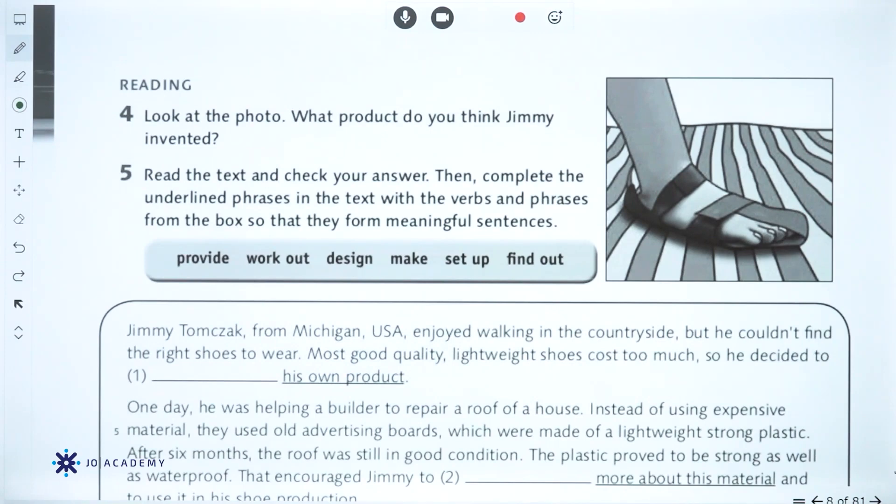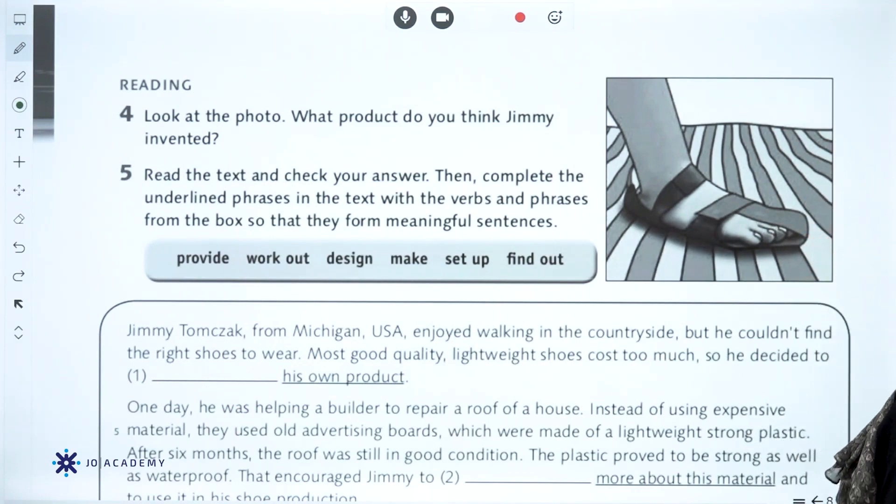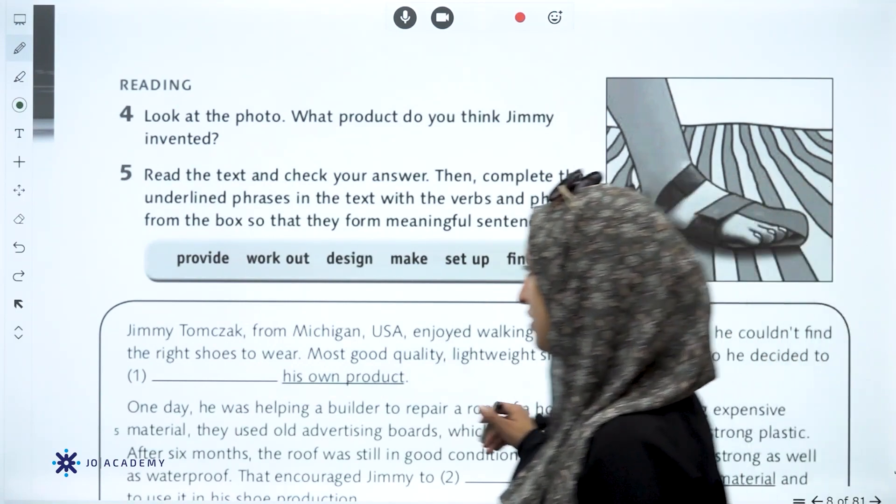Let's move to the second page, reading. Look at the photo. What product do you think Jimmy invented? Okay, read the text and check your answers. Then complete the underlined phrases in the text with the verbs and phrases from the box so that they form meaningful sentences.